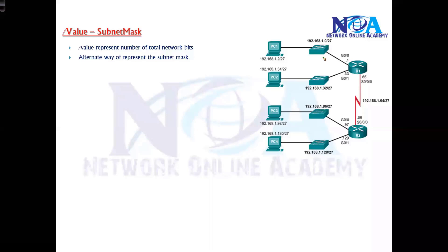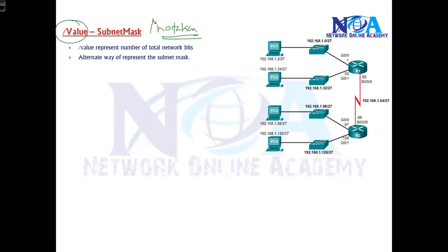The next thing we will try to understand is something called slash value or the subnet mask. Slash value, also called slash notation, is an alternate way to write your subnet mask information. It simply says how many total network bits we have.